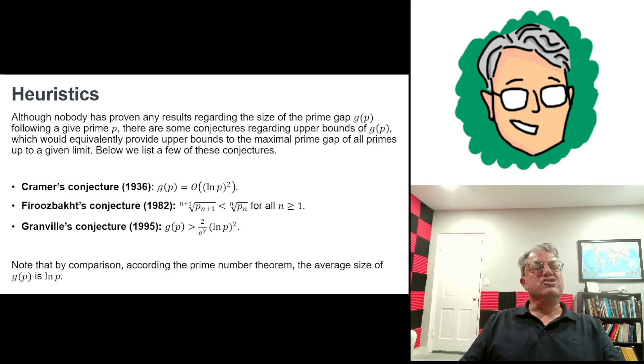There's also a conjecture called Firoozbakht's conjecture. He came up with it in 1982. He said that the (n+1)st root of the (n+1)st prime P sub n+1 is always, he conjectures it's always less than the nth root of the nth prime. Kind of an interesting result. And finally, Granville, I think, refined Kramer's conjecture in 1995.